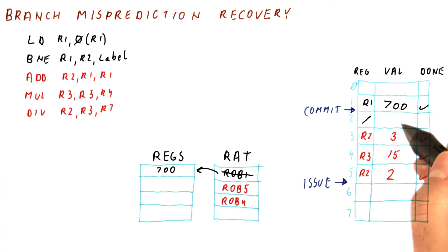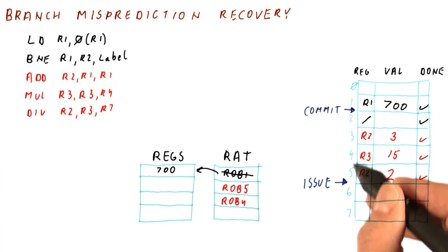Eventually, we get to resolve this branch and figure out that it's been mispredicted. So now, the branch will be marked as done. We will now start fetching from the correct instructions, but the question is, how do we get rid of the ones that we had wrong?